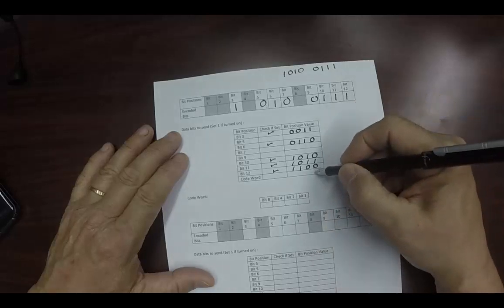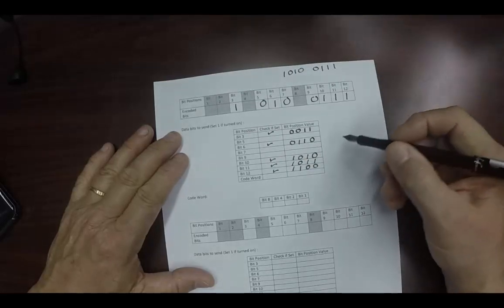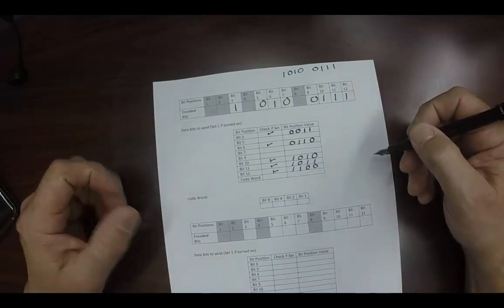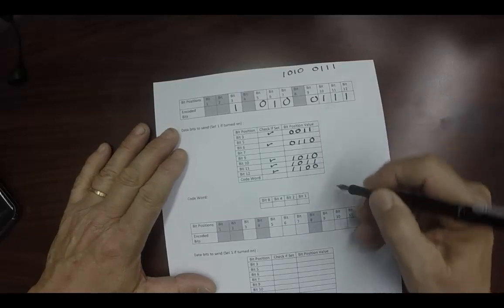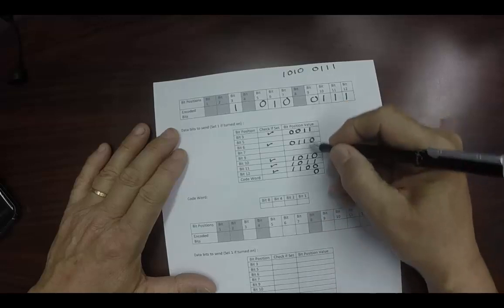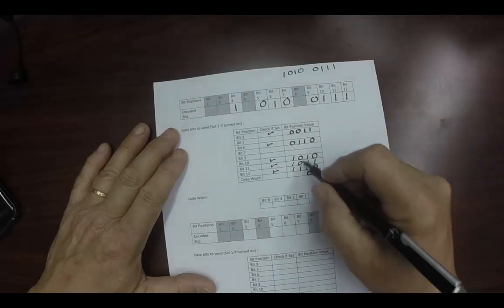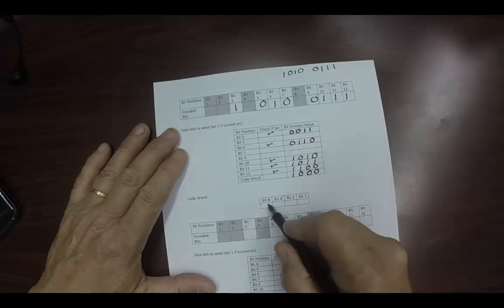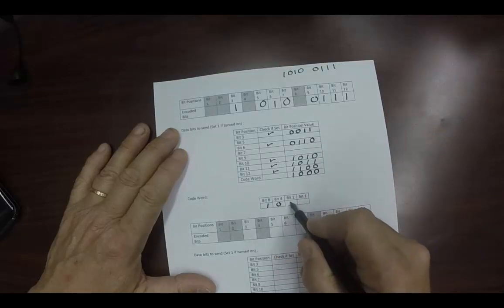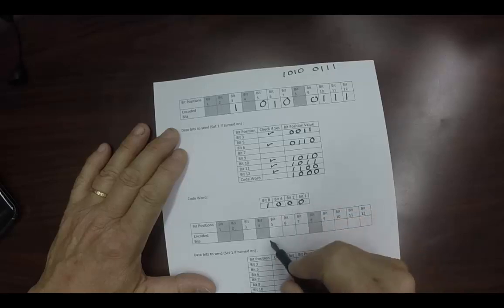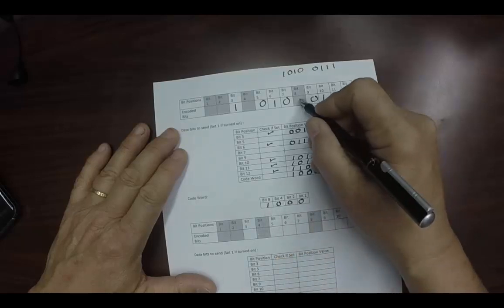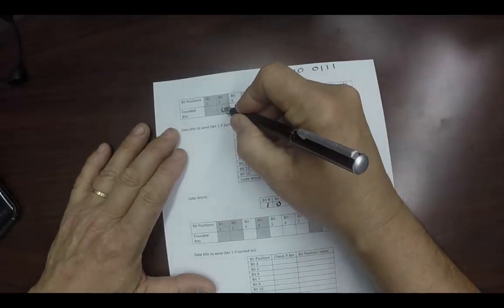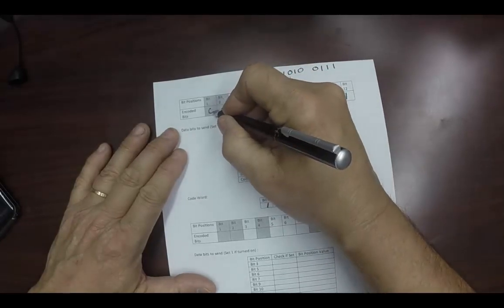Now, then what we do is we want to generate the code word or the parity bits. That is done by using what's called modulo 2 arithmetic. But essentially what you do is you look at the bits right here. And if it's an even number of bits in a column, you put a 0. If it's an odd number of bits, you put a 1. So the only odd number of column bits is the leftmost column. And that is the parity bits that we're going to put in here. The whole thing is called a code word, by the way. Then we put these back in their relative positions. So bit 8 gets a 1, bit 4 gets a 0, bit 2 gets a 0, and bit 1 gets a 0. And that is what's transmitted.